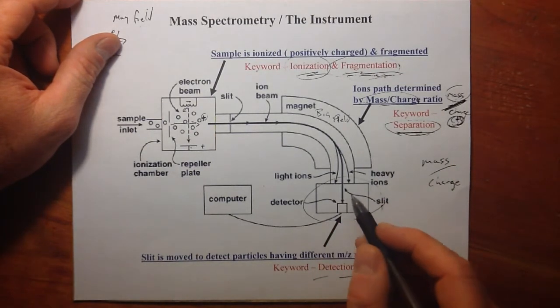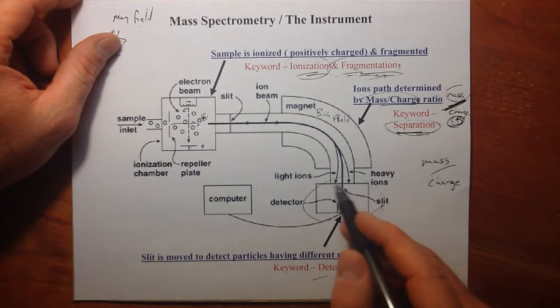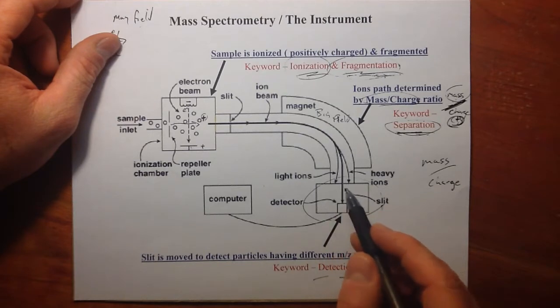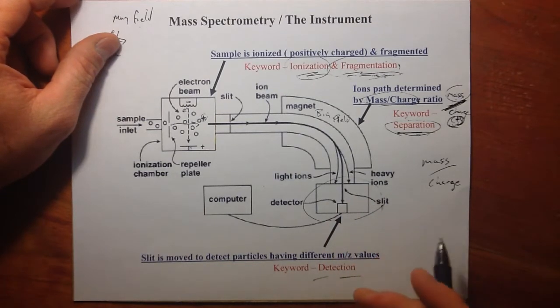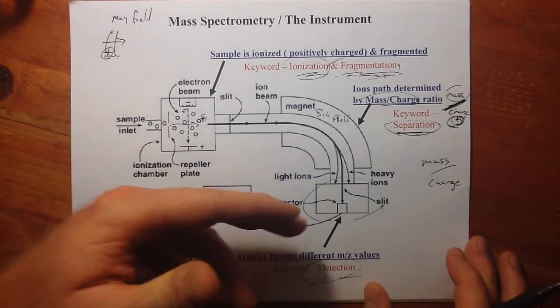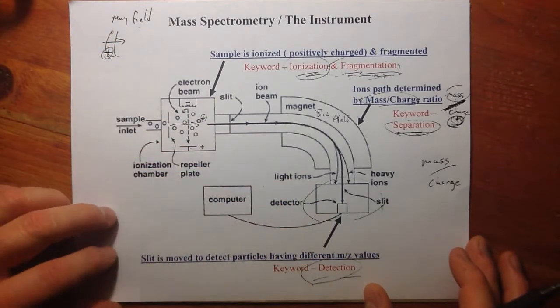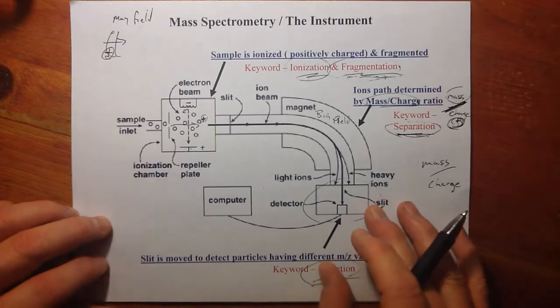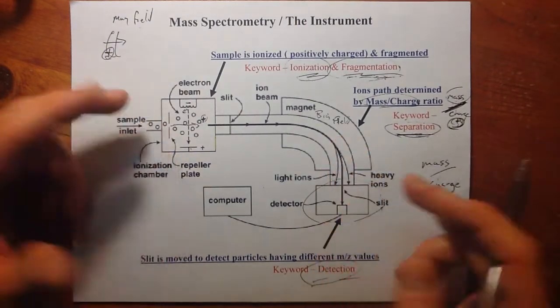And last, of course, the detector. We can look at where they fall in this bending process and detect that. We can have something in the plate that catches those charges, and then we see that charge and detect it. That's how it works, basically: ionization, separation, and detection.